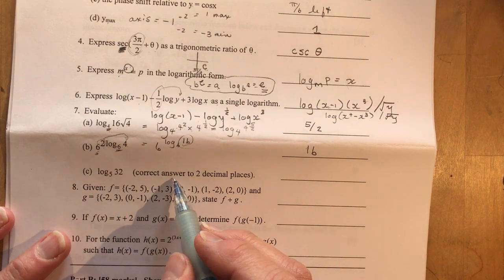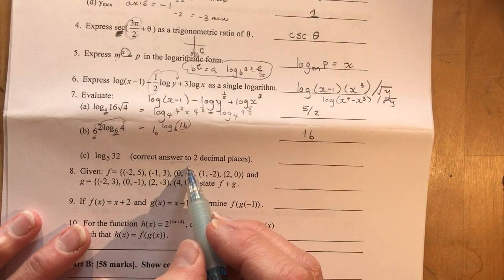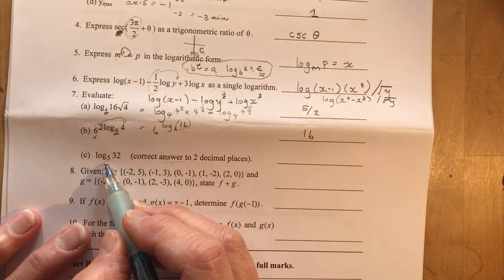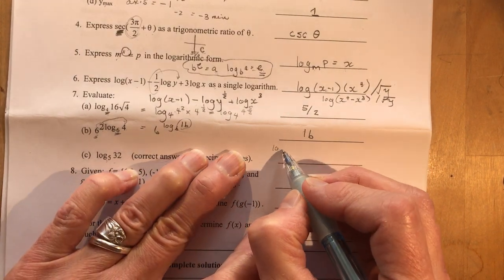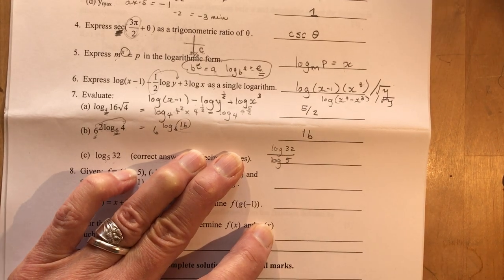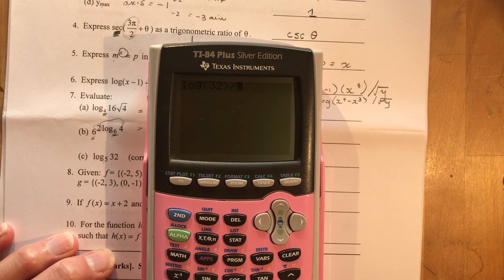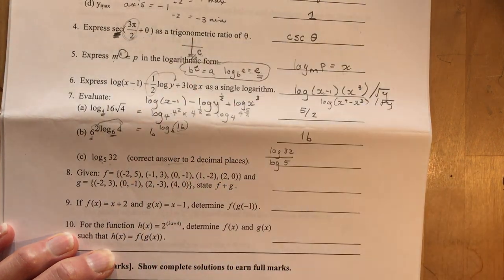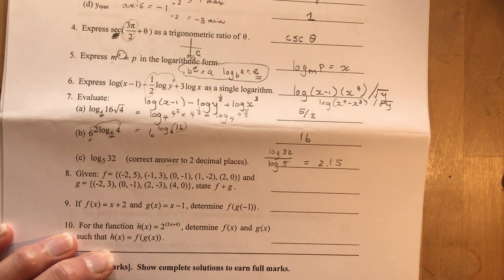Log base 5 of 32. Correct answer to two decimal places. So if you want two decimal places that's pretty obvious that you're going to need to use your calculator. So remember that you can do change the base formula. I can do log of 32 divided by the log of 5. Now that's going to require a calculator. So let's bring one in here. So I've got the log of 32 divided by the log of 5. And I've got 2.153. Two decimal places would be 2.15.